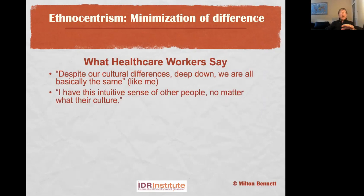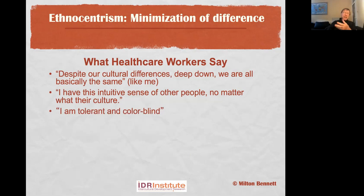Another common statement: 'I have this intuitive sense of other people, no matter what their culture.' Well, maybe. It's more likely that other people are adapting to you and you just don't know what cultural differences they're dealing with. This bothers people of color — when someone from a dominant group says, 'I'm tolerant and colorblind.' People are not really colorblind. What you're saying is: 'I don't think color should be the basis for our judgments of one another' — that's a good thing to say — but you probably shouldn't say you're colorblind, because people of color do have an experience of their color becoming an important factor in how people interact with them, frequently negatively — hardly ever in a colorblind way.